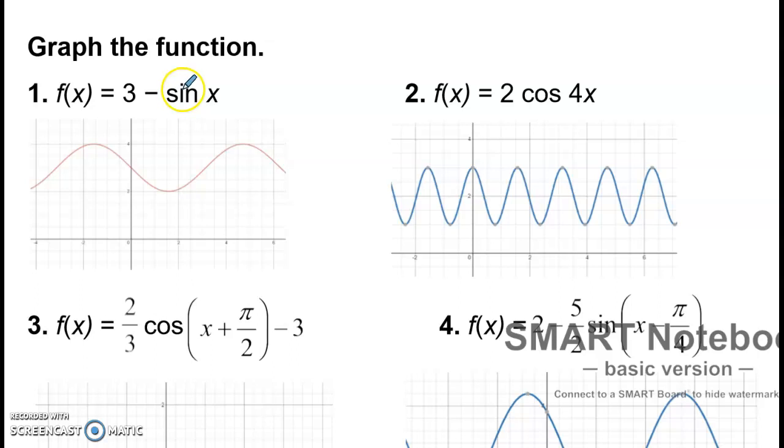3 minus sine of x. So this time you could think of this one as, well first I have the negative sine of x. Well the negative sine of x, instead of going up, is now going down first and then up. It's still sine of x, so a complete period is 2π, which is about 6.28. So it's about right here. But now it has this 3 being added to it. So the midline goes from 0 up to 3.